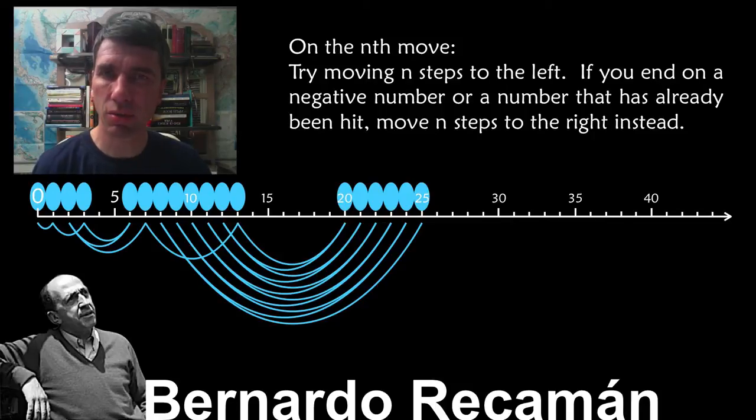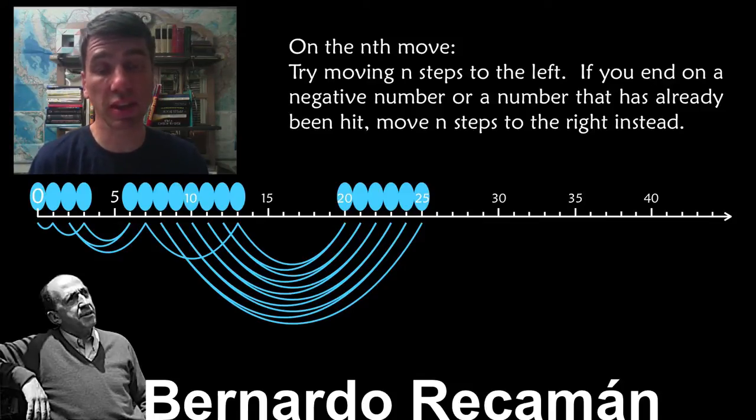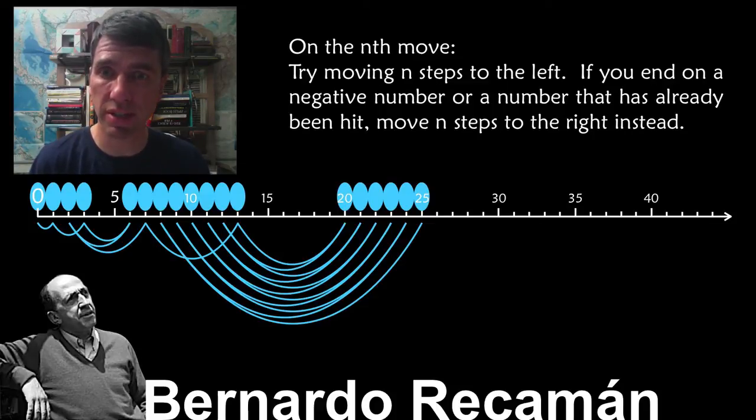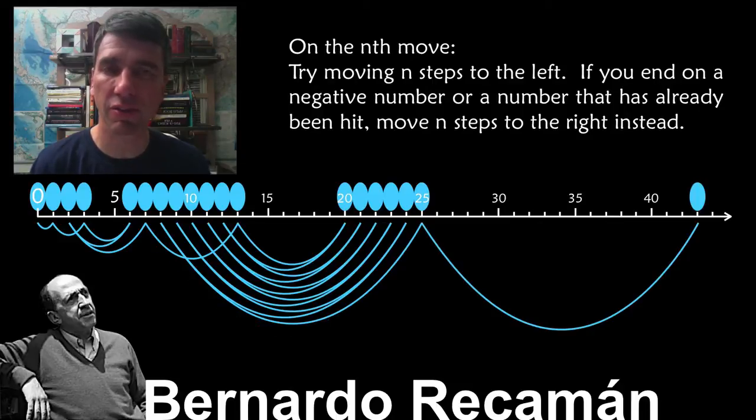I'm going to get you to find the next answer. So we're at twenty-five right now, and we need to step eighteen. We're at step eighteen, so you either have to go eighteen to the left or eighteen to the right. Which is it? So try to figure it out. The correct answer is eighteen to the right, and we are at forty-three.